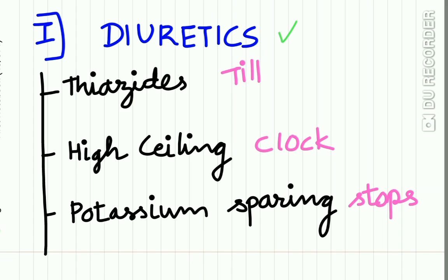The diuretics group has three subclasses. Continuing the mnemonic: 'How long should you study? Till the Clock Stops' — Till for Thiazides, Clock for high ceiling diuretics, and Stops for potassium-sparing diuretics.